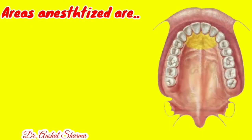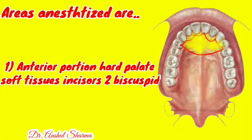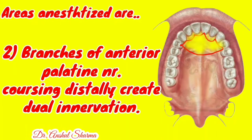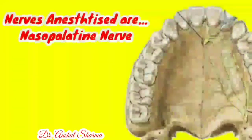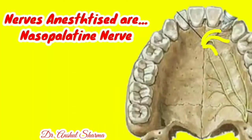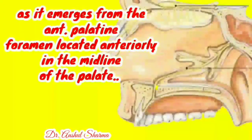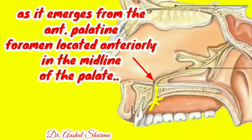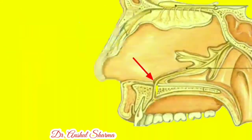The areas anesthetized are the anterior portion of the hard palate and overlying soft tissues from the incisors to the bicuspid area. The branches of the anterior palatine nerve coursing distally create a dual innervation. The nasopalatine nerve is the target nerve, anesthetized as it emerges from the anterior palatine foramen, located in the midline of the anterior palate.